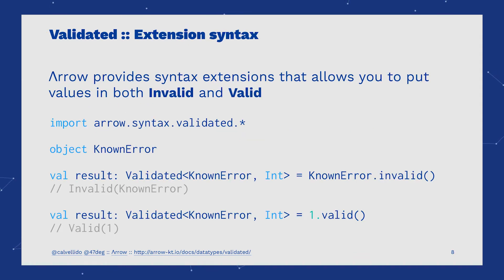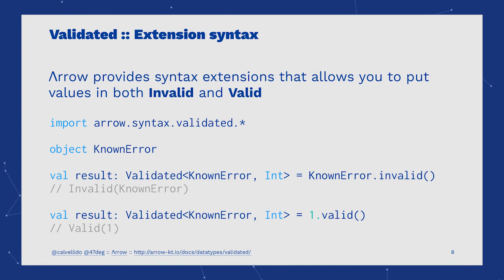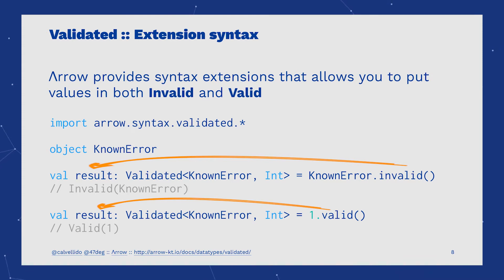Arrow provides an extension syntax for Validated. We can easily lift values to the left — Invalid — and right — Valid — cases, provided the receiver declares a type in which we know that the other case is.